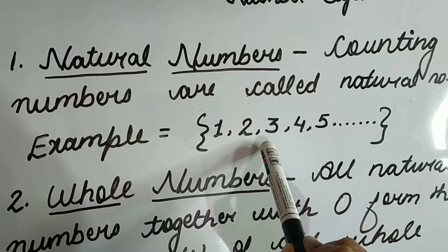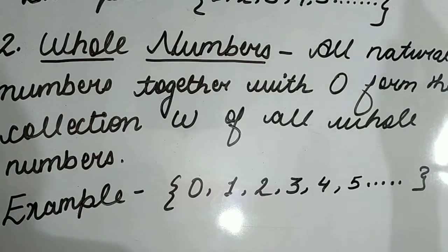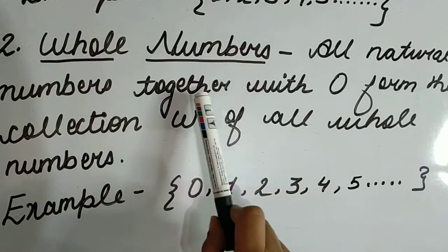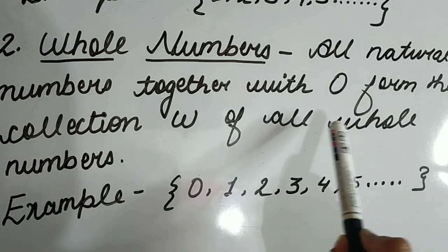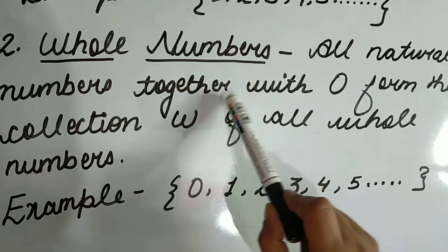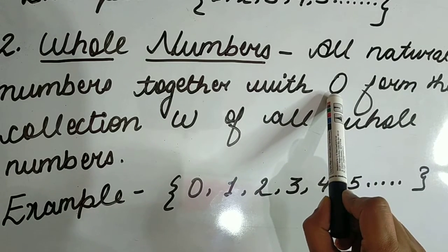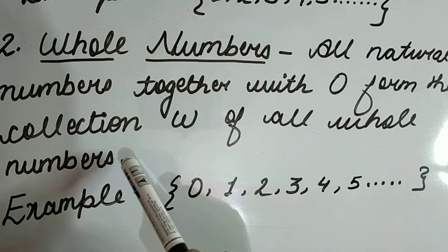Now whole numbers. What are whole numbers? All natural numbers together with zero form the collection 'W' of all whole numbers. In whole numbers, zero is also included, which forms whole numbers.